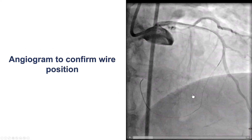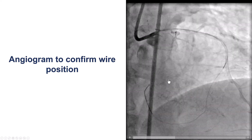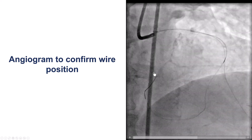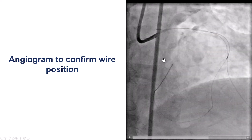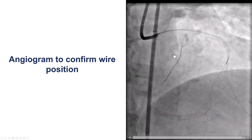Of course, we had to confirm that. This is the confirmation, showing that the retrograde wire has actually entered into the distal true lumen.